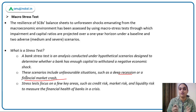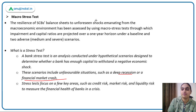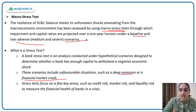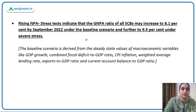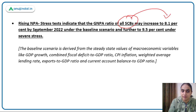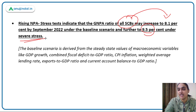Baseline scenarios and adverse scenarios are conducted in the tests. The stress test results reveal that the GNPA ratio of all Scheduled Commercial Banks may increase to 8.1% by September 2022 under the baseline scenario and further to 9.5% under severe stress. This means that if there is a stressful situation, NPAs will increase in Scheduled Commercial Banks.